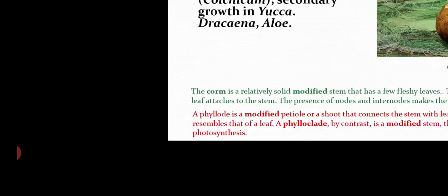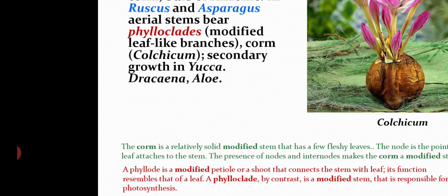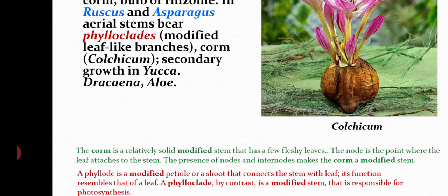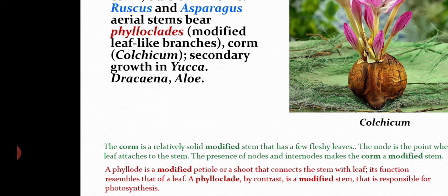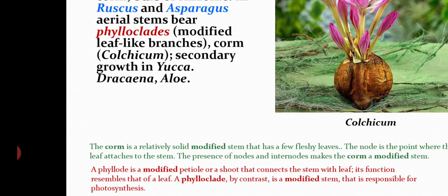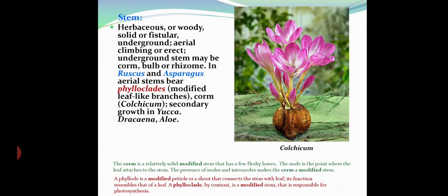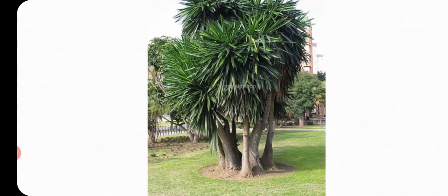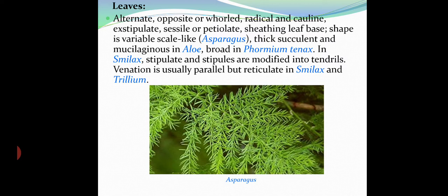A corm is a relatively solid modified stem with a few fleshy leaves; the presence of nodes and internodes makes it a modified stem. A phylloclade, by contrast, is a modified stem responsible for photosynthesis — that is why flowers emerge from the flattened stem of Ruscus. Secondary growth is found in Yucca and Dracaena, and very rarely in Aloe.